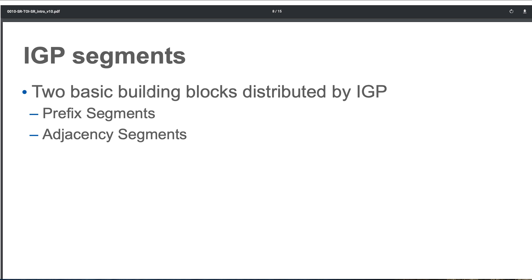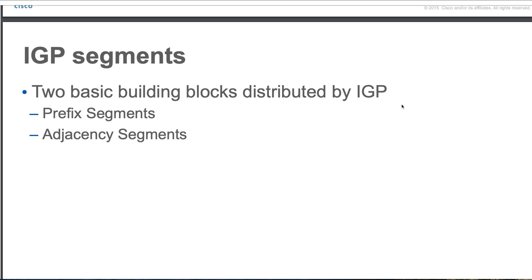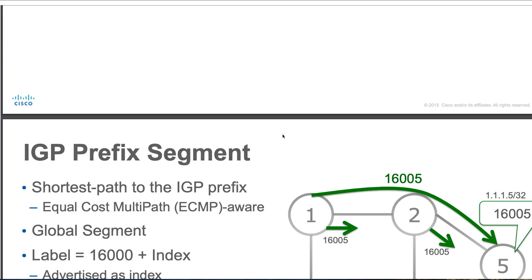That's how you identify nodes in your network. Now, there are IGP segments — distributed by your IGP, which are Interior Gateway Routing Protocols. For segment routing, we can use IS-IS or OSPF as the IGP, and both have the capability to distribute segments for segment routing. Within IGP segments, we have prefix segments and adjacency segments — the adjacency segment is between neighbors, and the prefix segment is unique to a particular node.